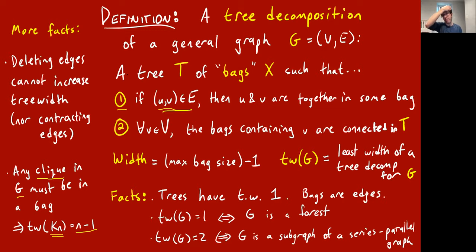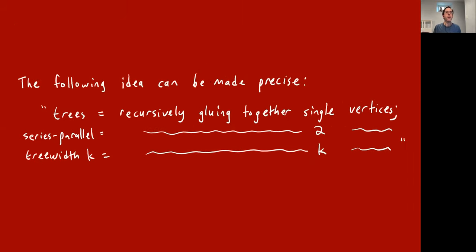Tree width takes a while to get used to, so I'm going to spend some slides telling you more equivalent definitions of tree width without proving anything. The point is going to be that, as we saw for series-parallel graphs and trees, lots of problems on graphs or constraint satisfaction problems can be solved in polynomial time for graphs that have constant tree width.